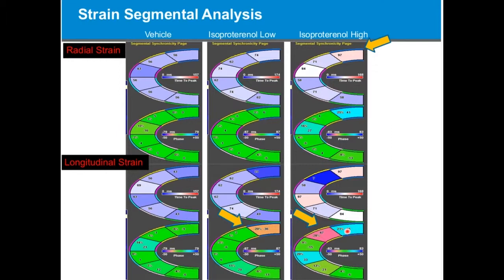It was interesting to note that you see a lot of the changes in the center segments of the septum, and it was interesting to find out at the end of the study that there was a circumferential pattern to the fibrosis development. So I think that our strain was picking up that development of the fibrotic tissue very nicely.